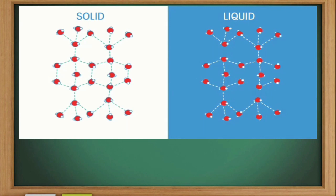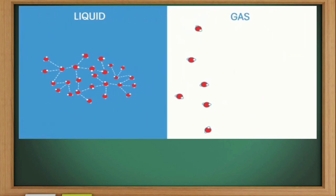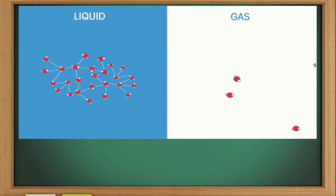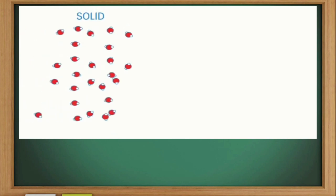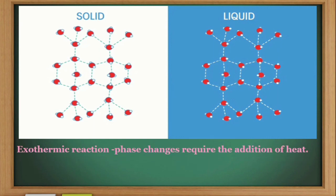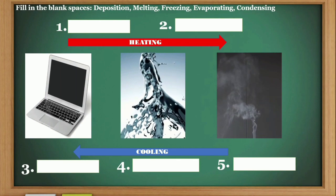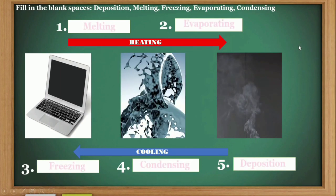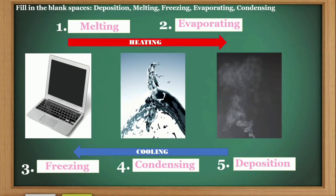Forces no longer hold them together as tightly. The same happens when a liquid is heated — the attractive forces between the molecules break, leading them to become more widely dispersed and a gas to form. All of these changes in the phase of matter are accompanied by either an input or output of heat, so they are either an exothermic or an endothermic reaction.